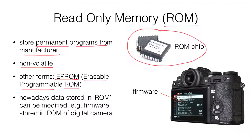And nowadays, the information stored in the ROM can be erased or can be updated. A very typical example will be the firmware stored in the ROM of the PC or some other device such as the digital camera.